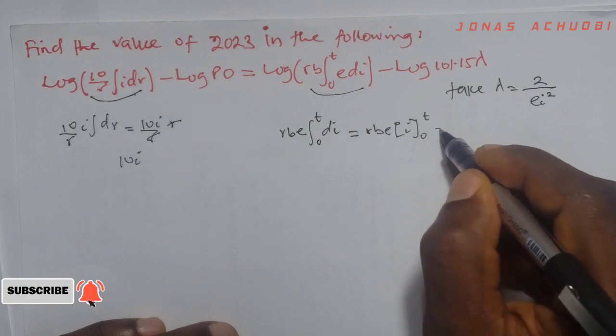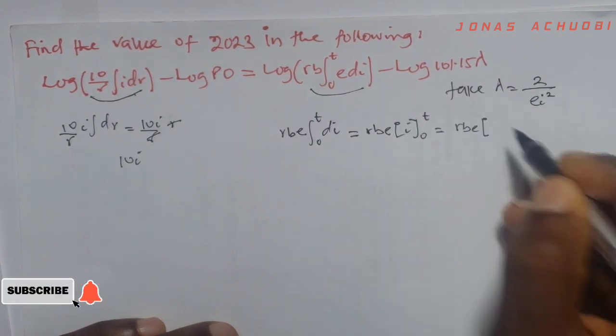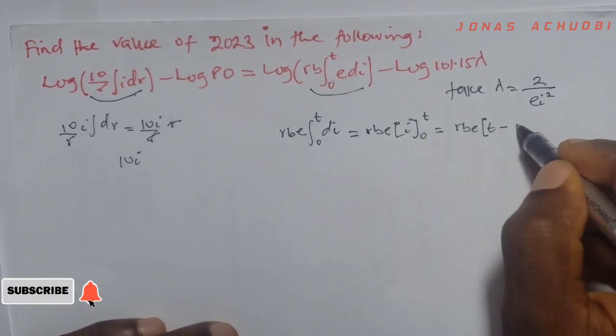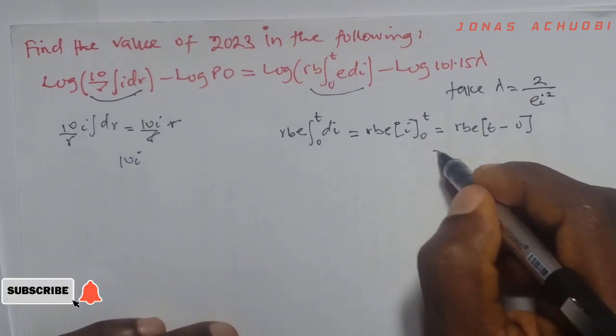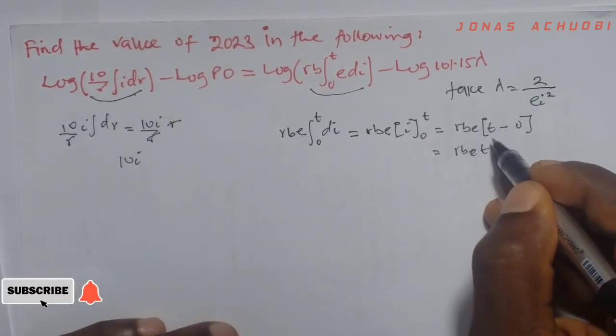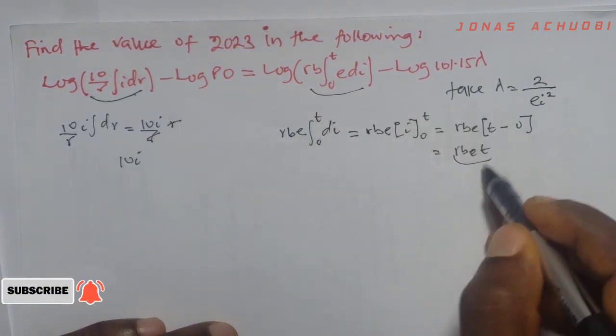So if we bring in our limit, our limit of integration, we have rbe into, the upper limit is t, so we put here t minus, the lower limit is 0, we have 0. This is equal to rbet, rbe times t is rbet times 0 is that. So for the second integral, we have this.